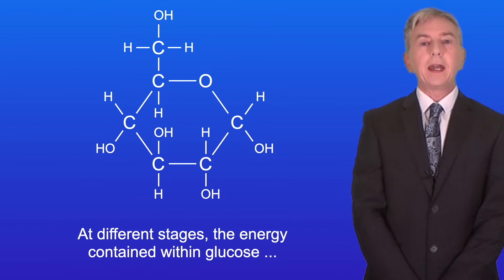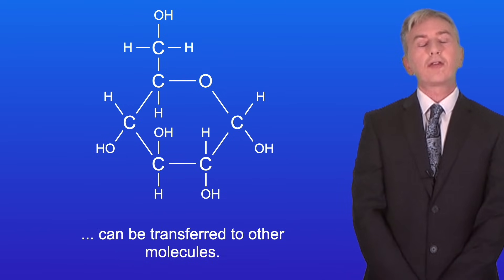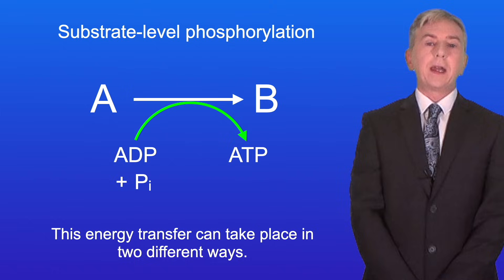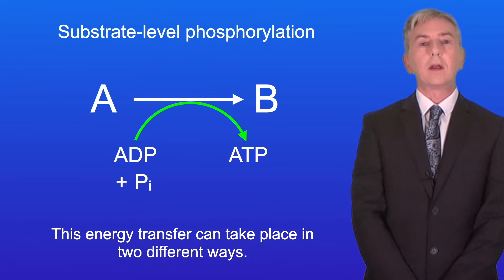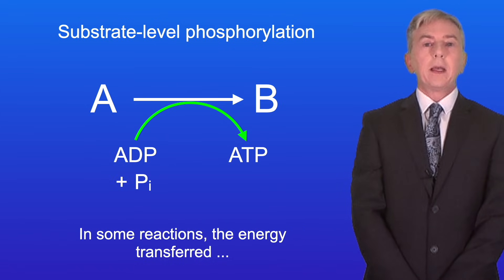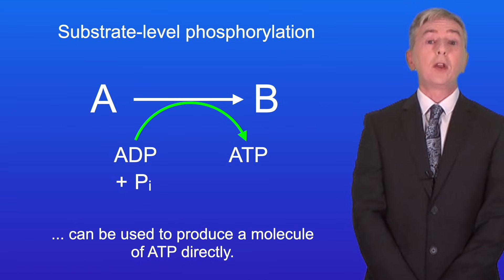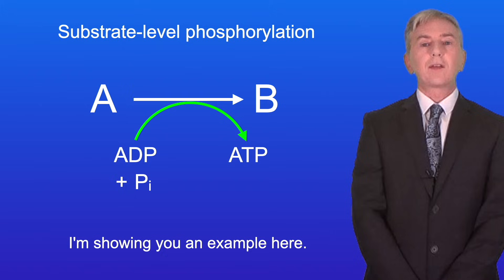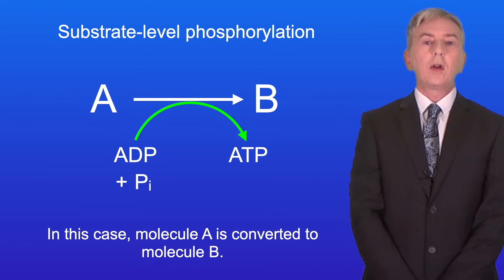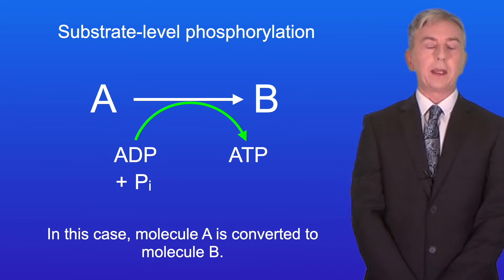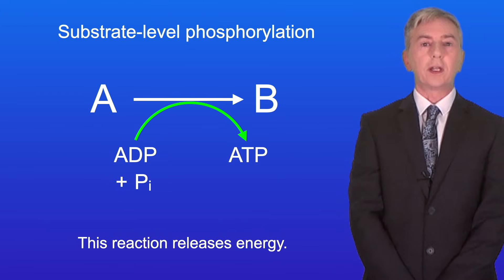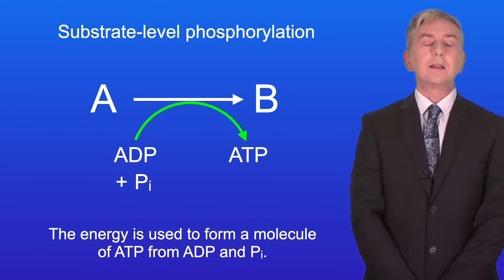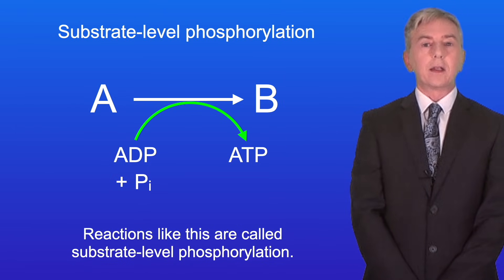At different stages the energy contained within glucose can be transferred to other molecules, and this energy transfer can take place in two different ways. In some reactions the energy transferred can be used to produce a molecule of ATP directly. In this case molecule A is converted to molecule B, and this reaction releases energy. The energy is used to form a molecule of ATP from ADP and Pi. Reactions like this are called substrate level phosphorylation.